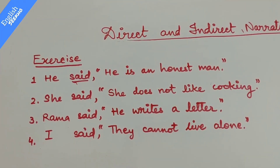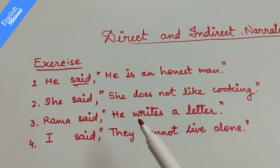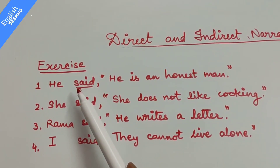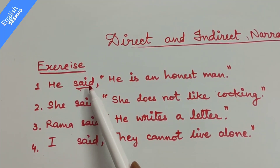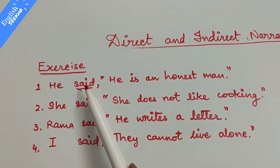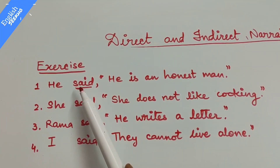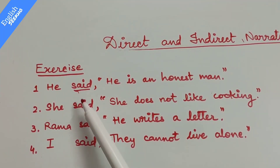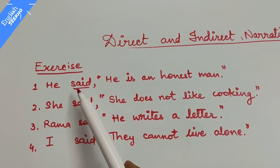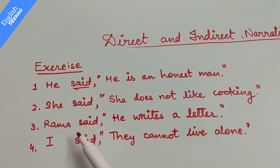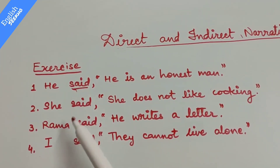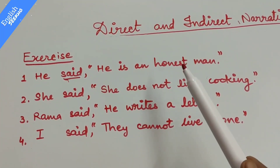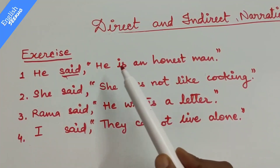Again, I have taken a few more examples. You can see that in all four sentences, the reporting verb is 'said' — past tense of 'say'. So first of all, you have to check whether the reporting verb is in past, present, or future tense. Here, 'said' in all four sentences tells us we are working with past tense, and tense changes must be applied throughout.